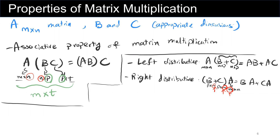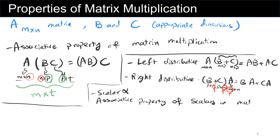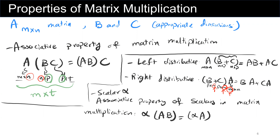The next property is the associative property of scalars in matrix multiplication. If we define a scalar alpha, then alpha multiplied by matrix A multiplied by B equals alpha A multiplied by B, which also equals A multiplied by alpha B. These are all equivalent.